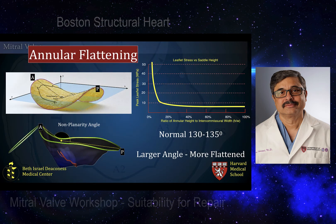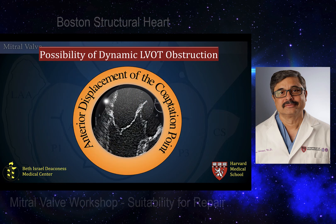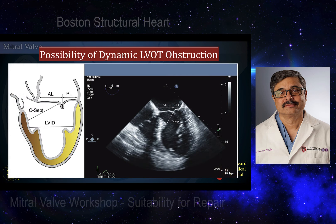We then perform a more complex assessment of the mitral annulus and leaflets when the patient has significant functional ischemic mitral regurgitation — including the non-planarity angle and leaflet angles. Finally, we exclude the possibility of dynamic left ventricular outflow tract obstruction, because repair causes significant anterior displacement of the coaptation point. With a long anterior leaflet, there is likelihood of dynamic LVOT obstruction, one of the commonest reasons for immediate repair failure. For this we perform the AL/PL ratio — lengths of the anterior and posterior leaflets — and the CSEP distance.